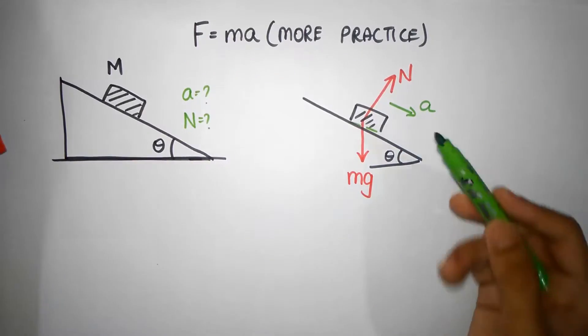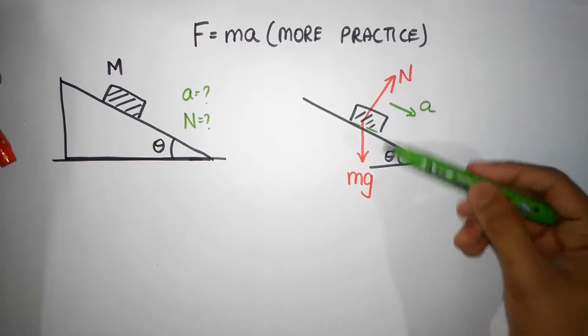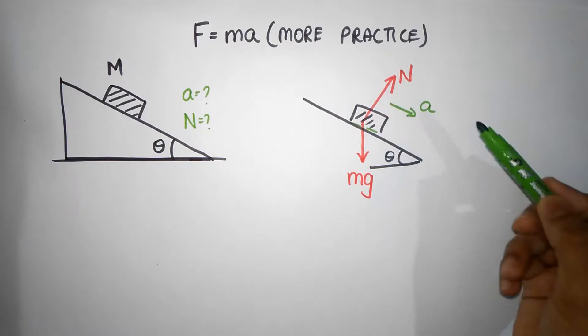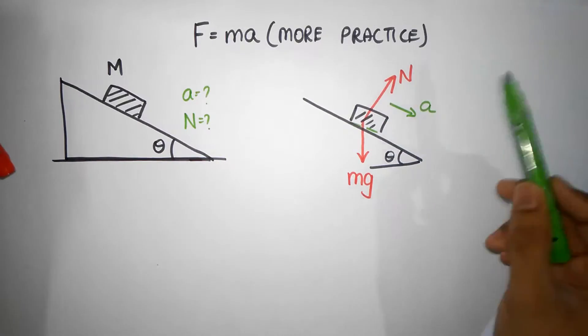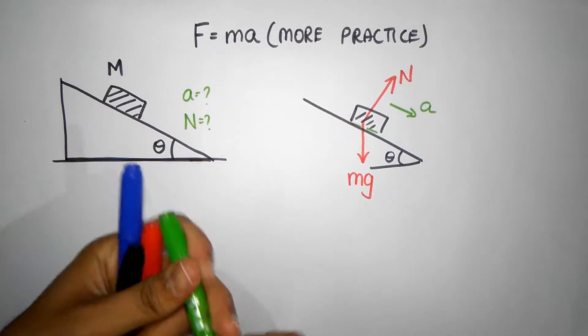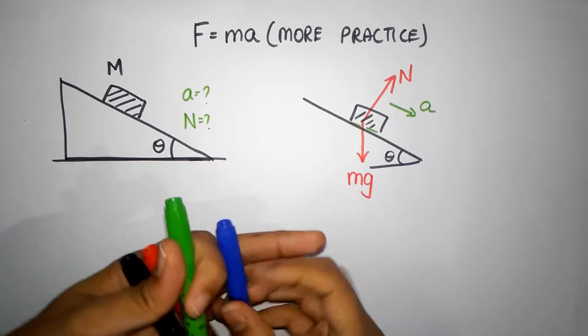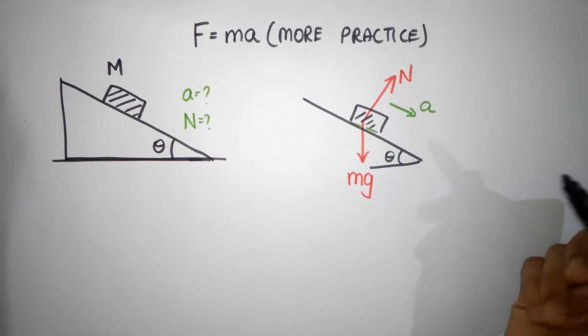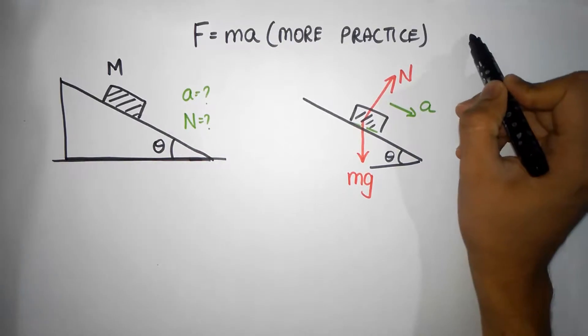Notice that the acceleration, the normal force, and mg are all in two dimensions. It's a two-dimensional problem, so what we're going to do is we're going to resolve. When we resolve, we choose two perpendicular axes, and we have the choice to choose how the perpendicular axes may be oriented.